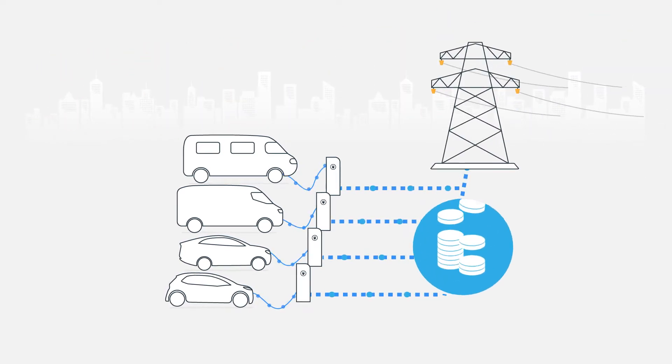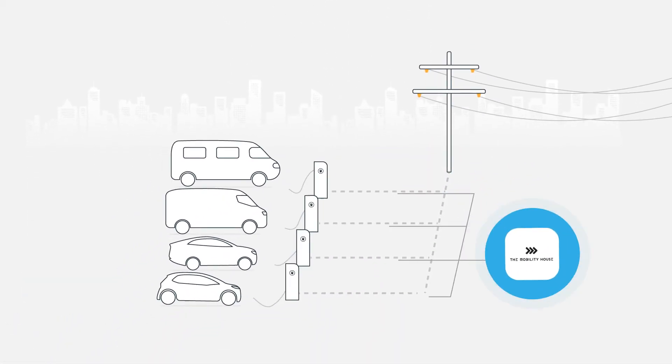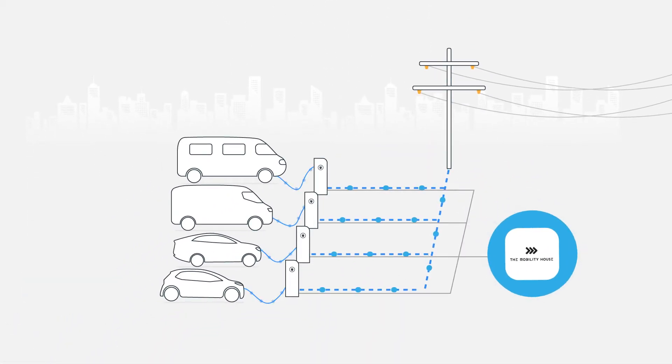Expanding is costly and sometimes not even possible. Thankfully there is an alternative with the Mobility House's charging and energy management system. It controls charging processes intelligently and charges your fleet reliably and economically.